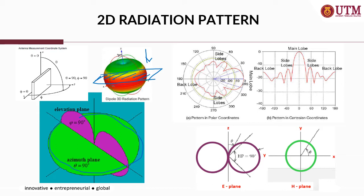We cut this at this plane, which is called the horizontal plane or azimuth plane — also called the H-plane. On the other hand, when we cut it vertically — cutting it in half here — we may see something like a figure-eight shape. This figure-eight shape appears when we cut it vertically, at the elevation plane.